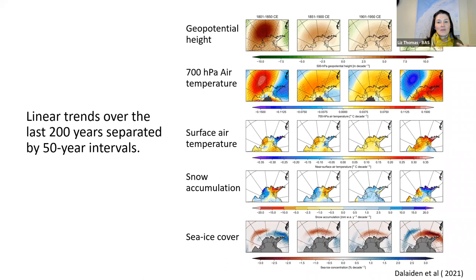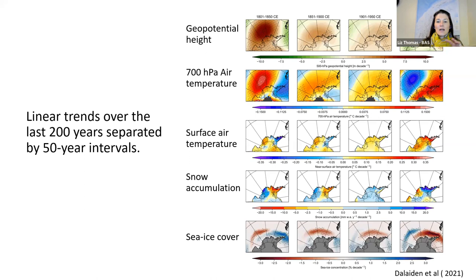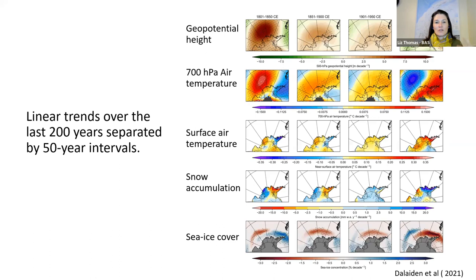Returning to the Quentin Daladin study, this figure shows linear trends in geopotential heights, temperatures, snow accumulation, and sea ice cover over the last 200 years, separated into 50-year time slices. Focusing on the last 50 years: we see strong warming over West Antarctica and the Antarctic Peninsula, and the deepening of the Amundsen Sea Low. These are relatively well documented, but the advantage of data assimilation approaches is being able to put all these different parameters together and look at their relationships and how they vary through time.